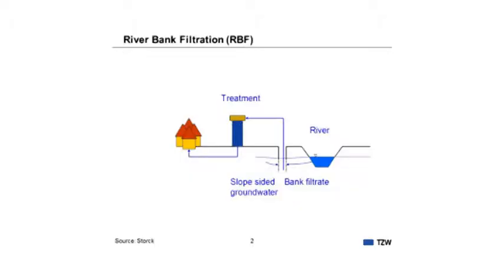Just a few words about both systems. First, the bank filtration system. Here we have a river with surface water, and near the river bank some water is extracted. You can have a mixture with slope-sided groundwater. This is then abstracted, and you can have further treatment.